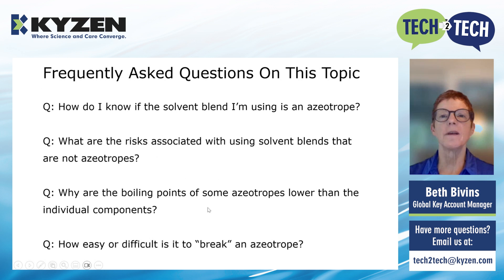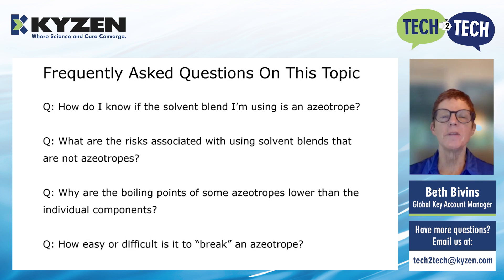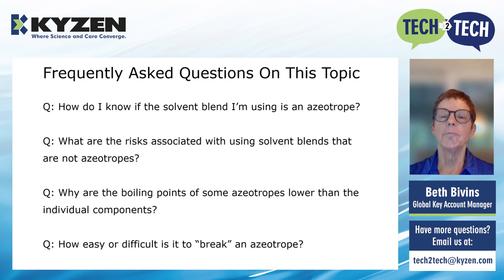A few questions. How do I know if the solvent blend I'm using is an azeotrope? If you have analytical equipment, you can run a GC over time — let it sit out or boil it in a distillation apparatus or vapor degreaser — or you can ask your supplier for that information. What are the risks associated with using solvent blends that are not azeotropes? If they are labeled as non-flammable, they can become flammable over time. Their cleaning performance can change, their solvency properties can change, and there are many unknowns about what will happen over time.